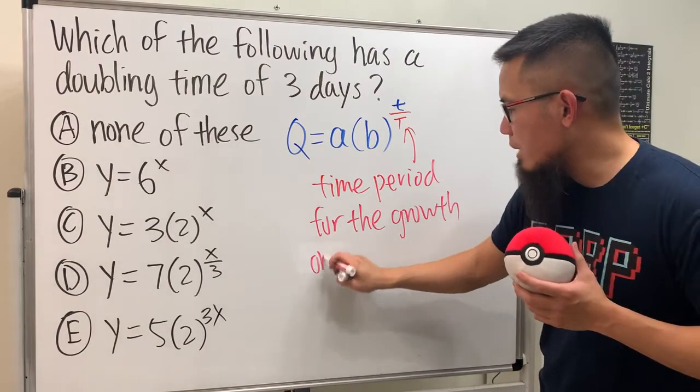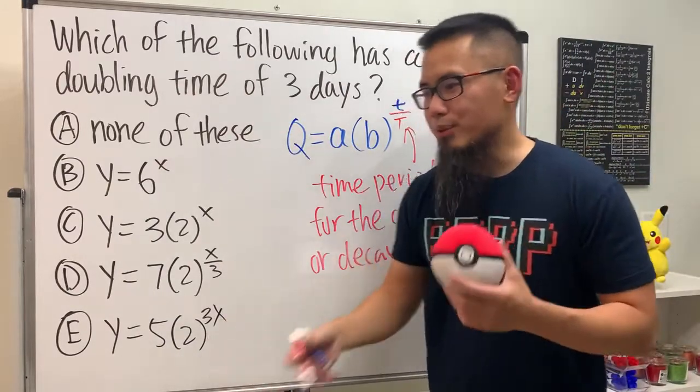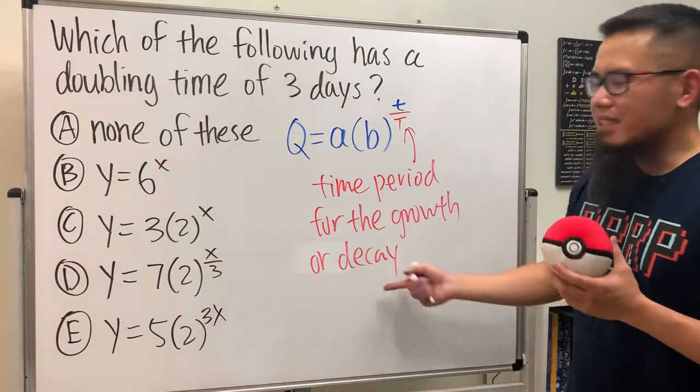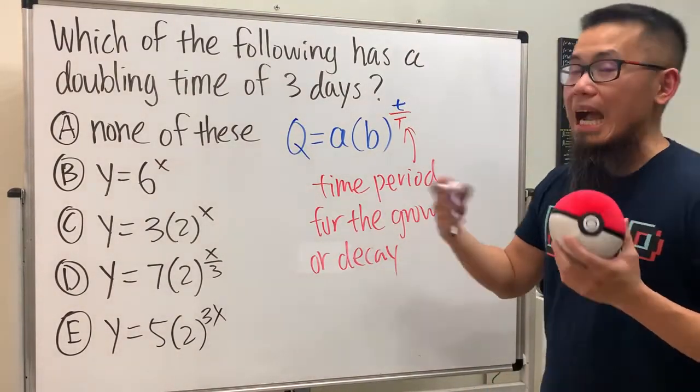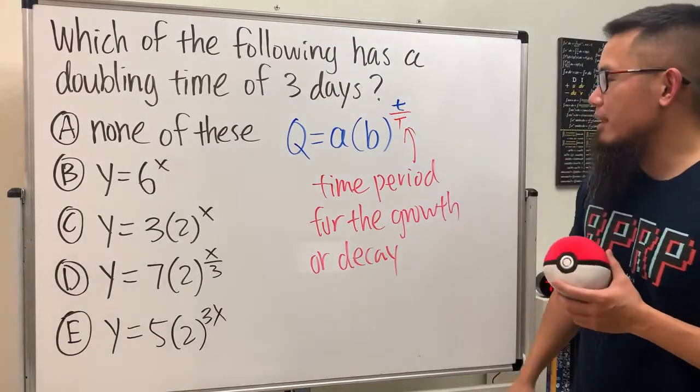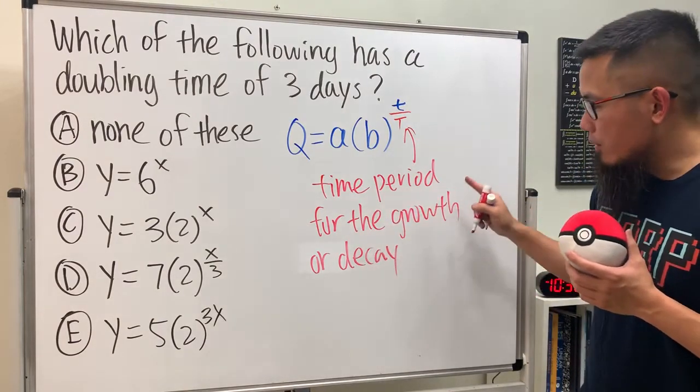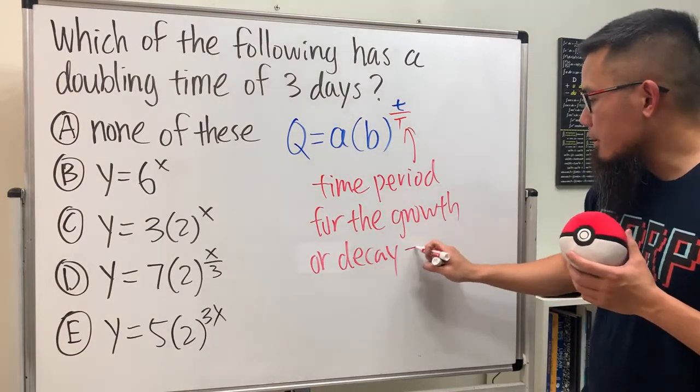...growth or sometimes decay. Well in this case it would be the growth because doubling means you multiply by two so you are getting more and more. But sometimes if the question is say half life then that means you are getting less and less so it will be decay. But anyway though the capital T is the time period for the growth or the decay to happen.